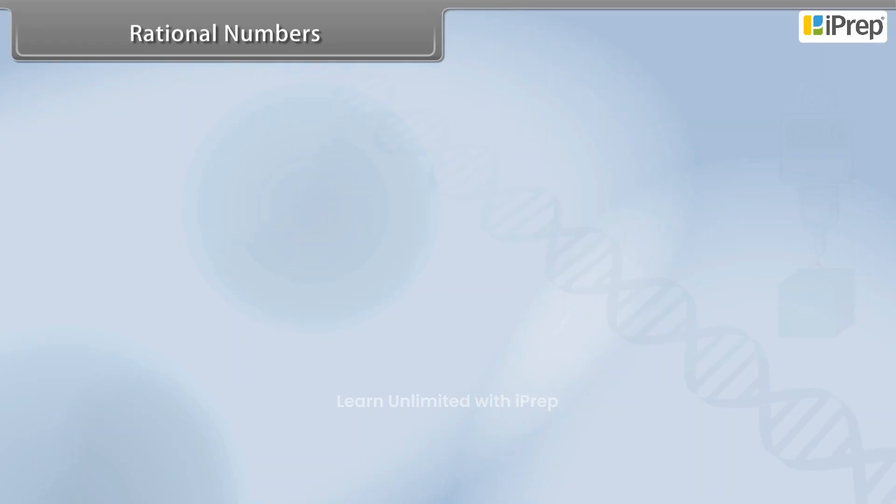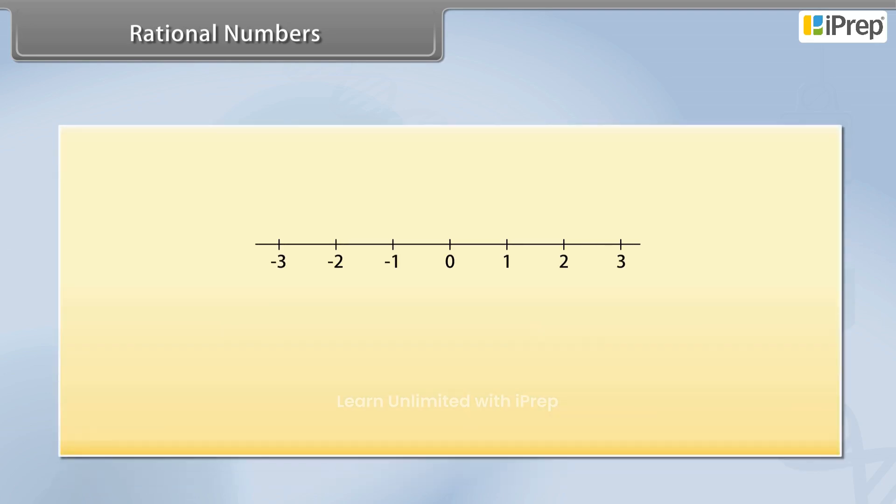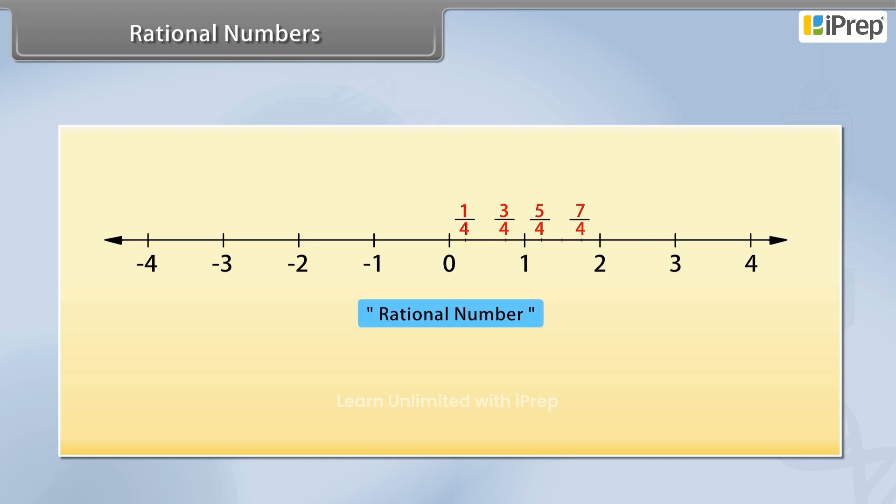Rational Numbers. Now if we see between the numbers 0 and 1 or 1 and 2, we will see numbers like 1 by 4, 3 by 4 and so on. The collection of these numbers is called Rational Numbers.